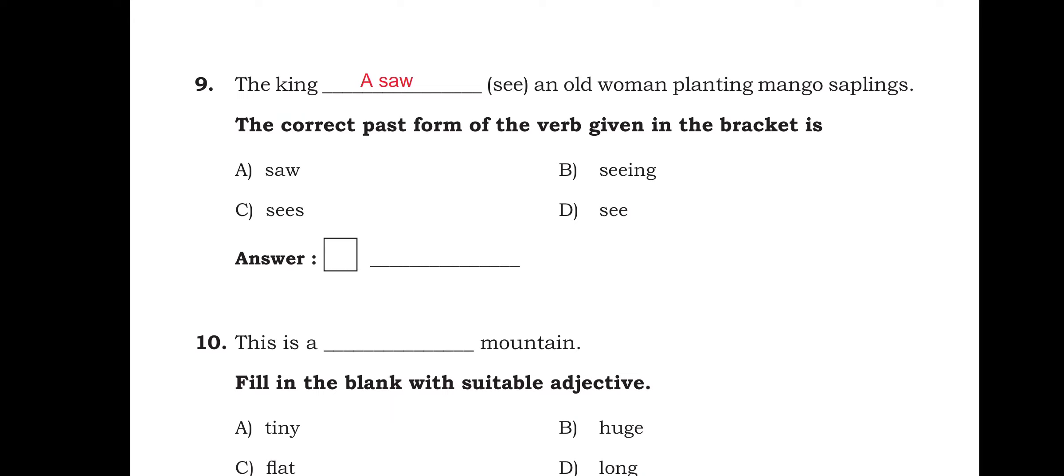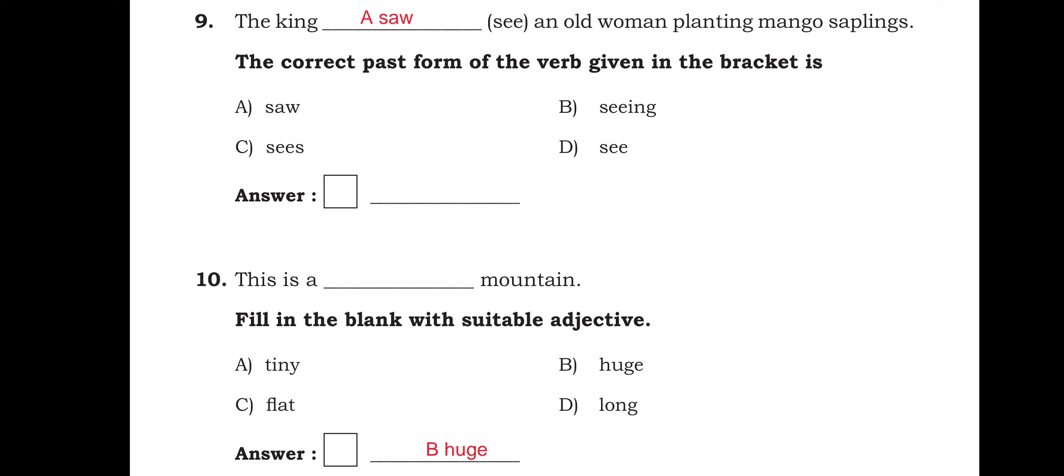The king, dash, saw an old woman planting mango saplings. So the king saw, option A is the right answer, saw an old woman planting mango saplings.